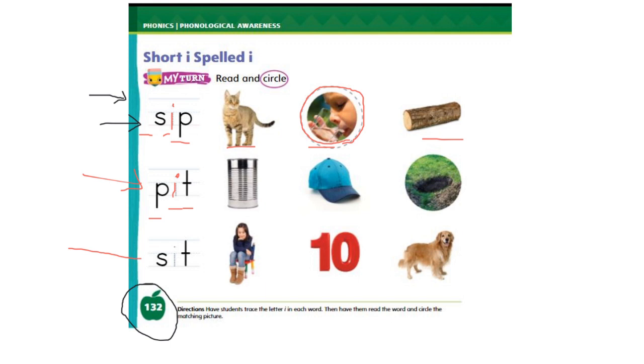Now, let's read the last word. First, trace the I in the middle of the word. S-I-T. S-I-T. Sit. S-I-T. Sit. Which picture shows sit? Circle it for me, please.